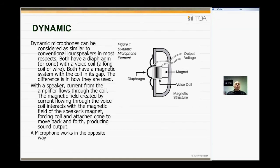The difference is how they are used. With the speaker, current flows through the coil. The magnetic field created by the current flowing through the voice coil interacts with the magnetic field of the speaker's magnet, forcing the coil and attached cone to move back and forth, producing sound output. In a microphone application, the sound hits the diaphragm, vibrates it, and as the voice coil moves, it sends electrical energy out the leads. That is then amplified through a preamp, mixer, amplifier, and then through your speakers. In a microphone it goes in this way; in a speaker it goes out this way.